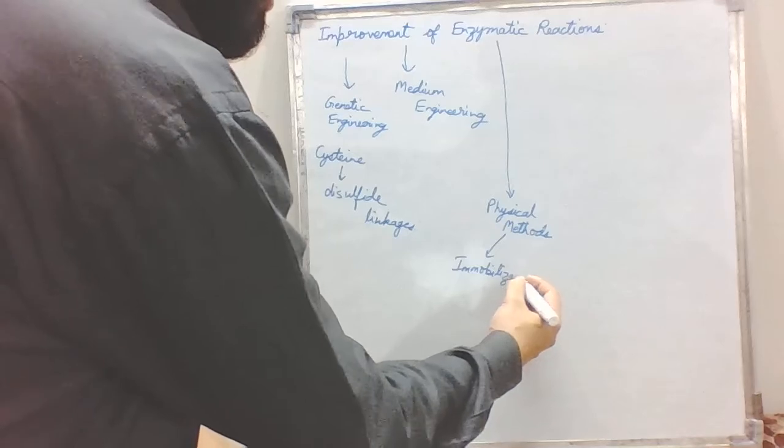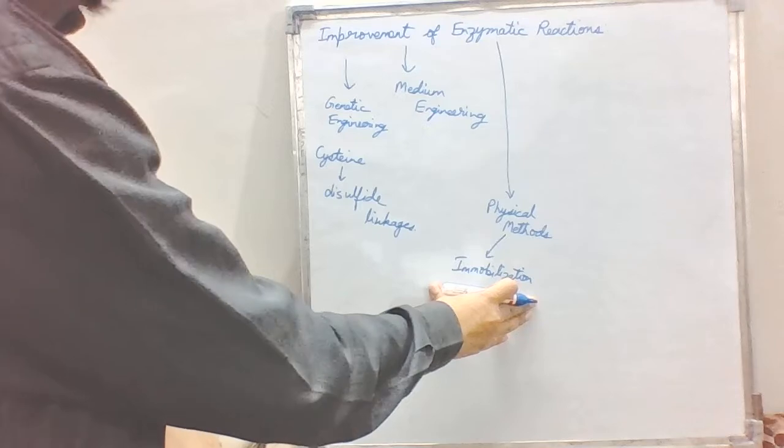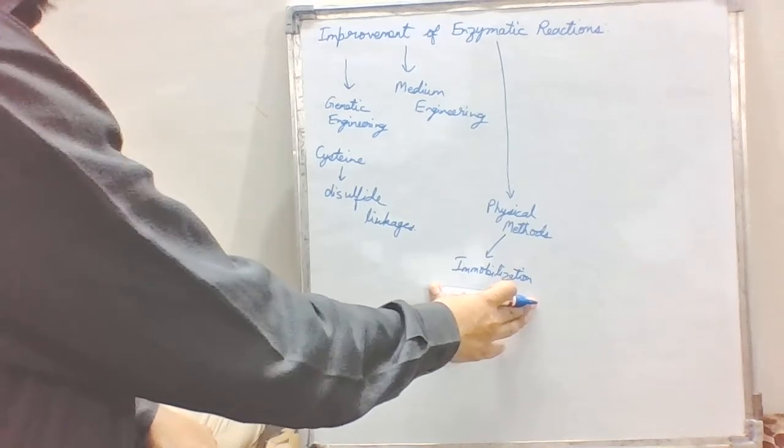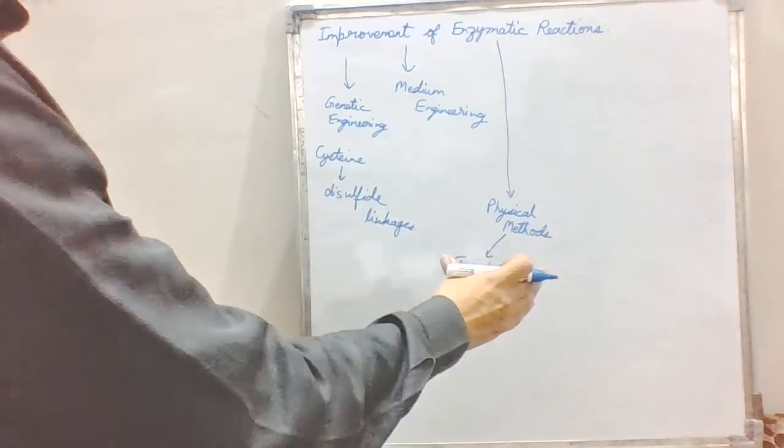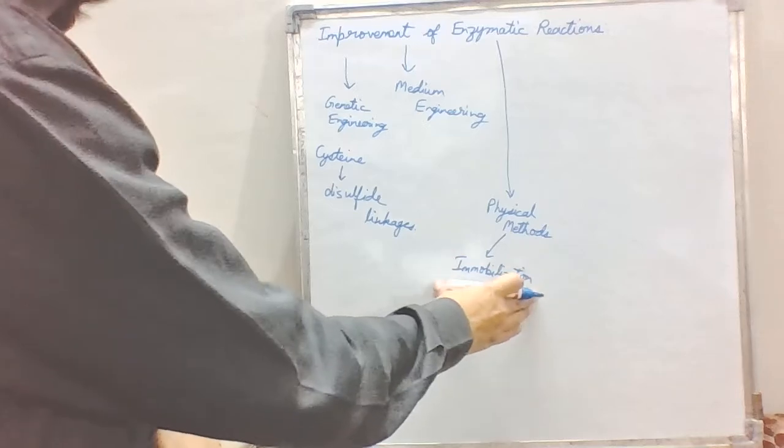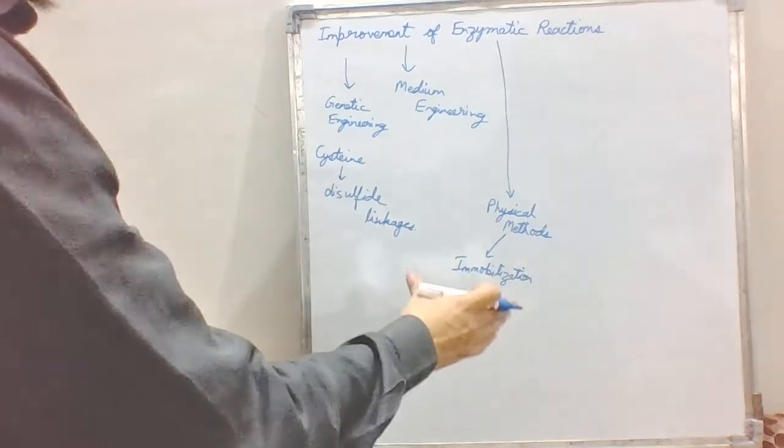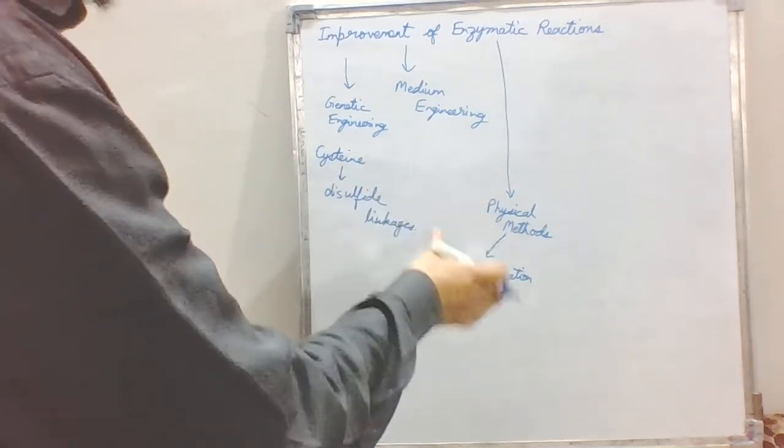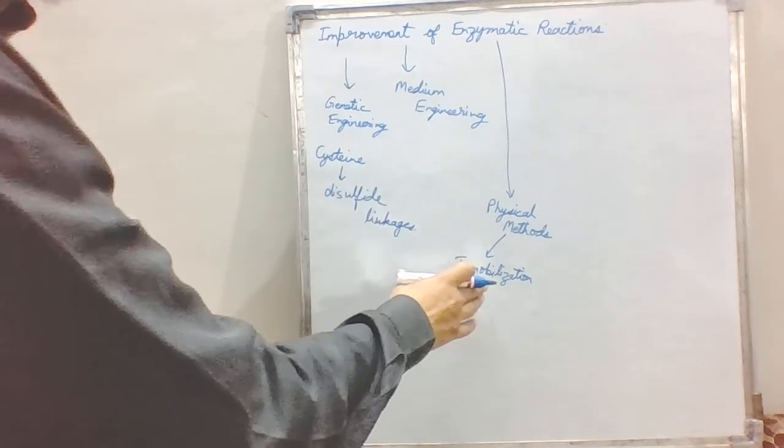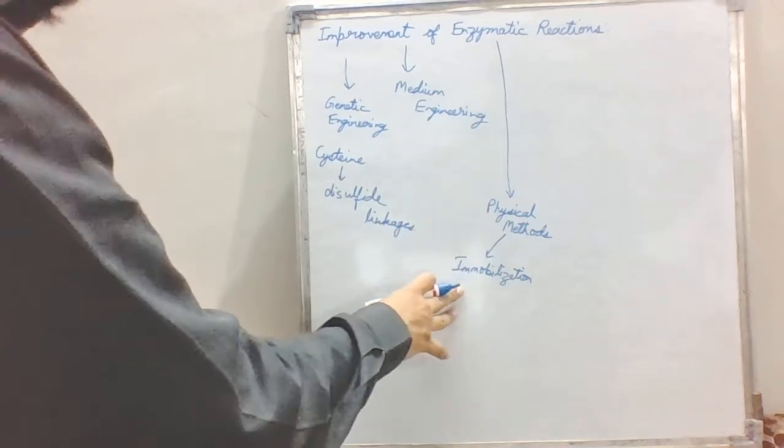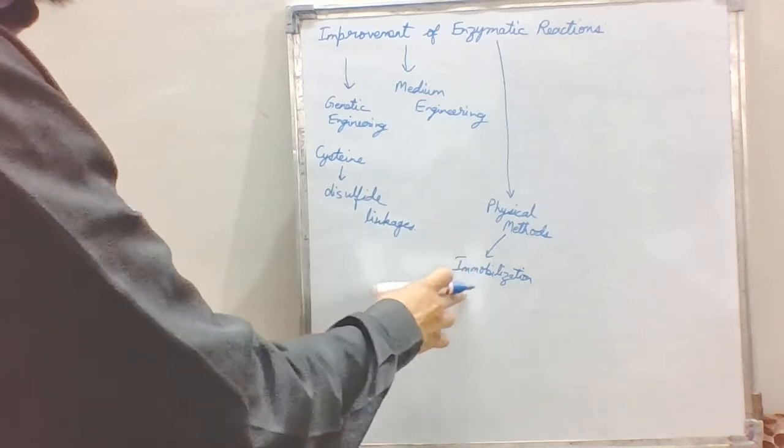There are basically two physical methods used to improve the enzyme. One is immobilization. It provides the ability to reuse the enzymes again and again, so this makes the system very much economical and cost effective. It also imparts strength to the enzyme. It might make the enzyme more temperature and pH sensitive because of the partition effect on the immobilized enzyme surfaces. We have a different optimum pH for immobilized enzymes.